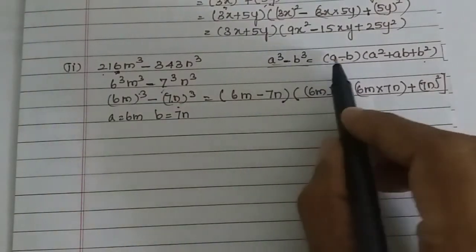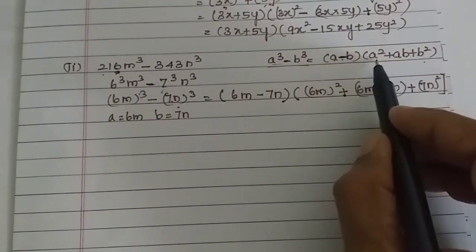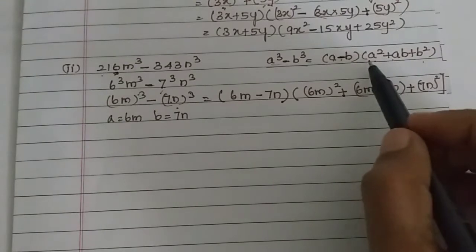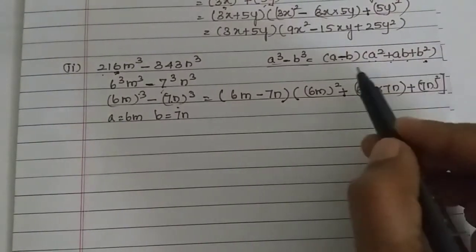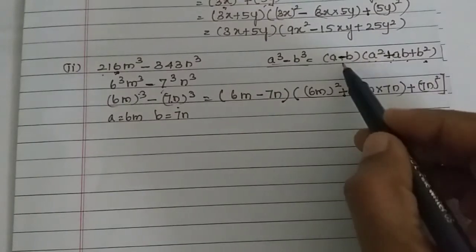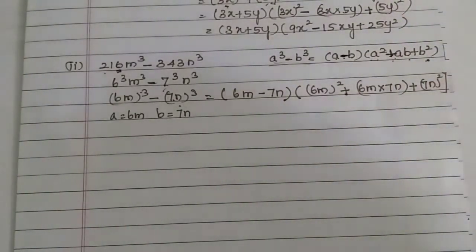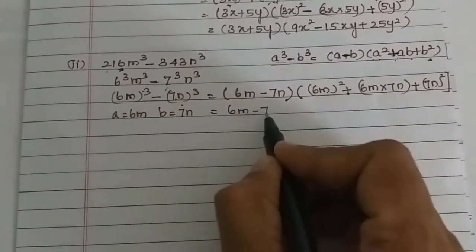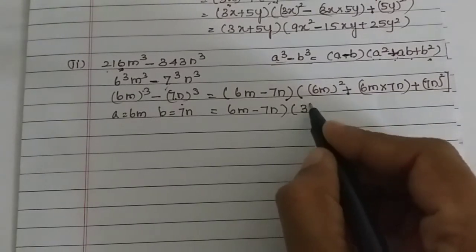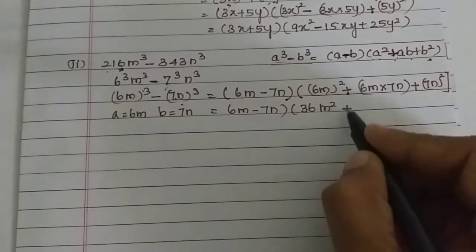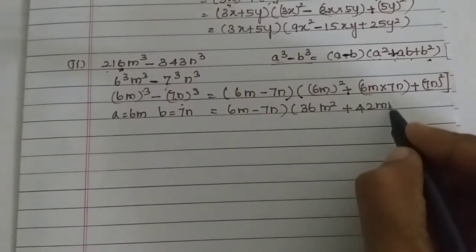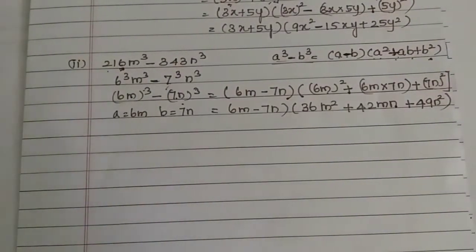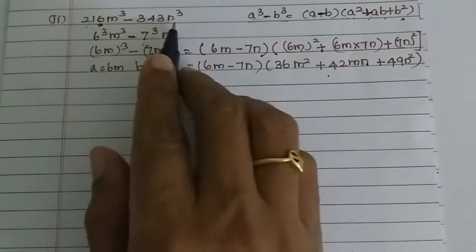For a³ - b³, the formula is (a - b)(a² + ab + b²). Note the sign rule: if you have minus between cubes, the first bracket has minus, and the middle term inside becomes plus. So the result is (6m - 7n)(36m² + 42mn + 49n²). These are the factors of 216m³ - 343n³.